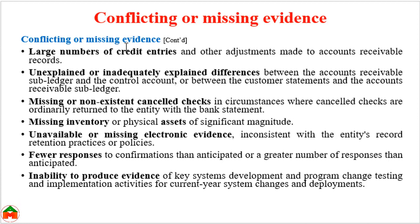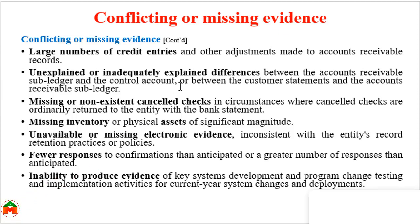There are further examples of conflicting or missing evidence as fraud risk factors: a large number of credit entries and other adjustments made to accounts receivable records, and unexplained or inadequately explained differences between the accounts receivable sub-ledger and the control account. If there is a difference between the sub-ledger and the control account with no clear explanation, that also indicates the possibility of fraud.